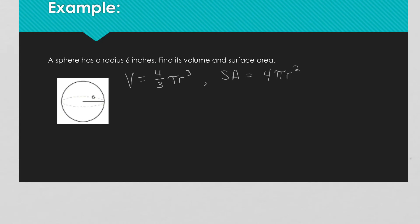Now we're going to find the volume and surface area of a sphere with a radius of 6 inches. For pi, we're going to approximate 3.14. To find the volume, we would do 4/3 times 3.14 times 6 raised to the third power, and that's exactly how I'm going to type it in on my calculator.